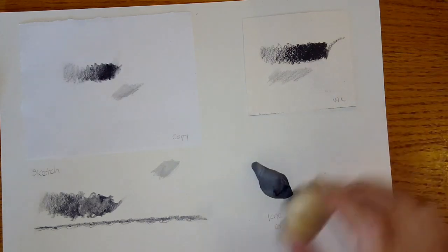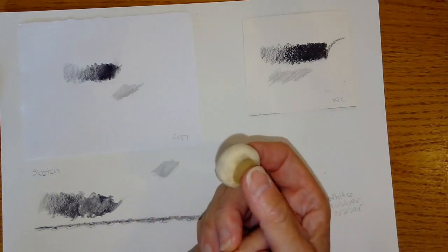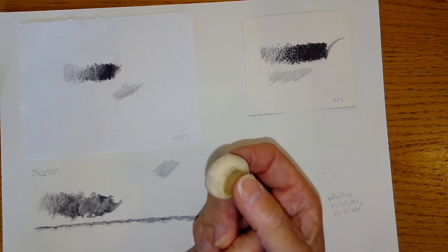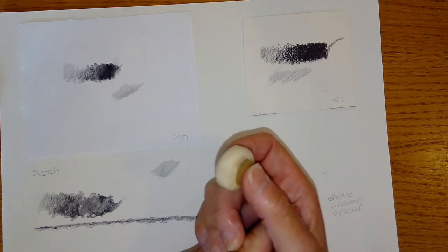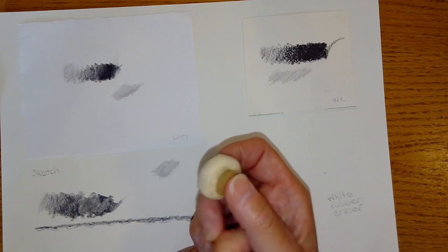Your white eraser is actually designed to take away all graphite on the page. However, if you have used a darker, softer pencil, or if you have applied a lot of pressure with that graphite, whichever pencil you choose, it may not take it all away, and you have to know that.